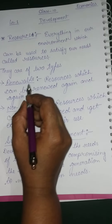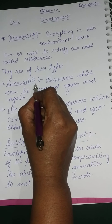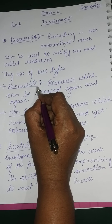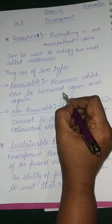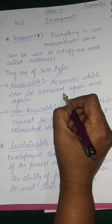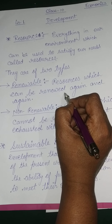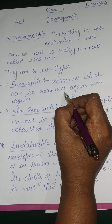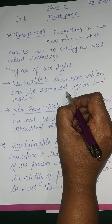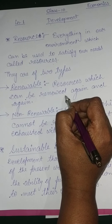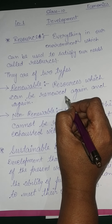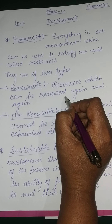The first is renewable resource. Renewable resource means those resources which can be renewed again and again — we can utilize these resources again and again. They will never exhaust from our environment. Even if we utilize them now, we can again utilize these resources in the future. You can take the example of solar energy.